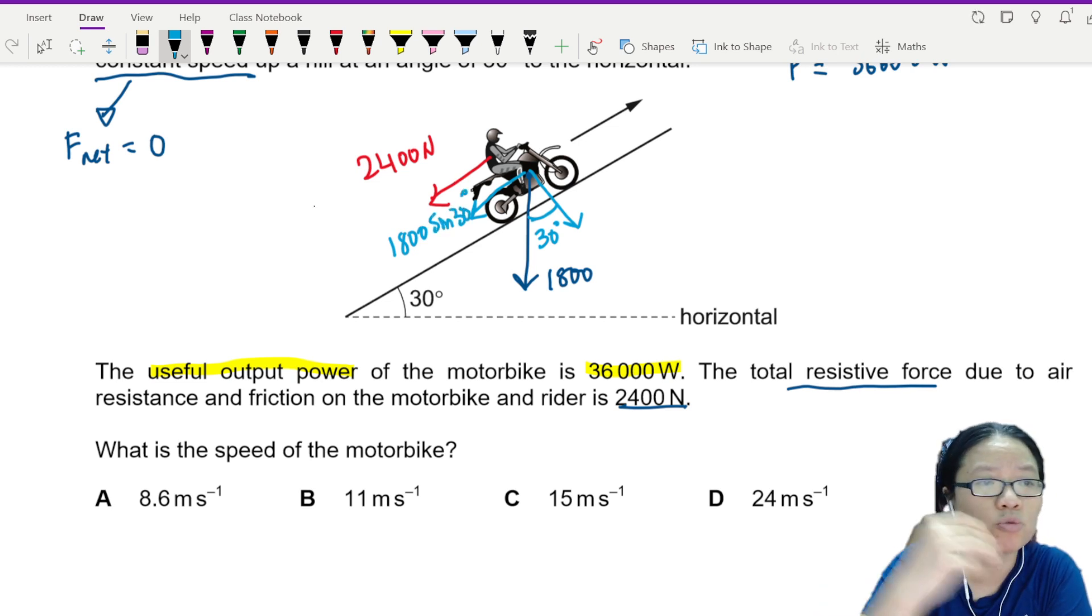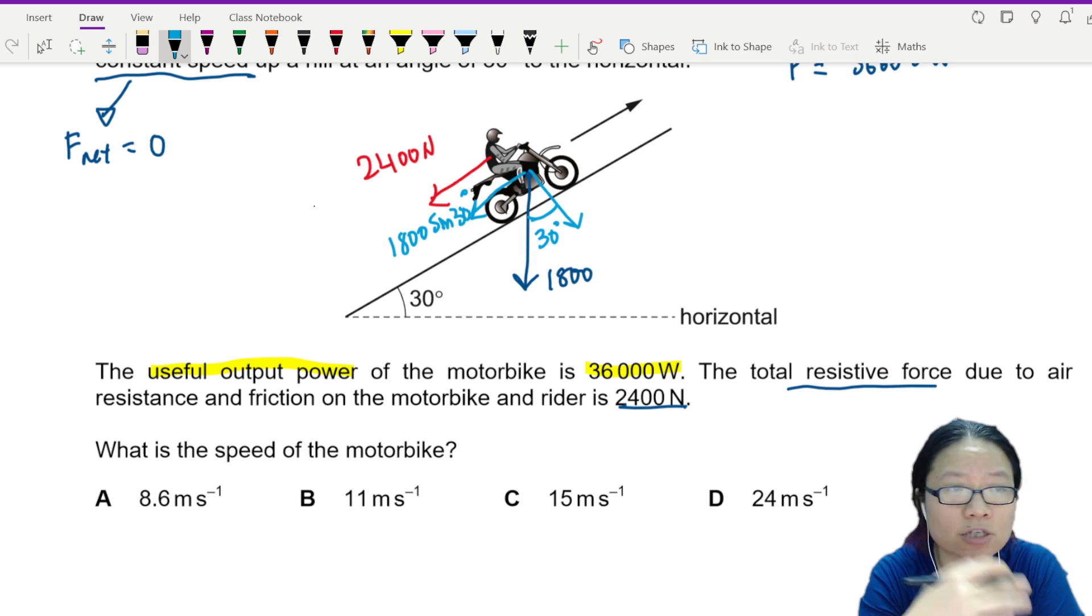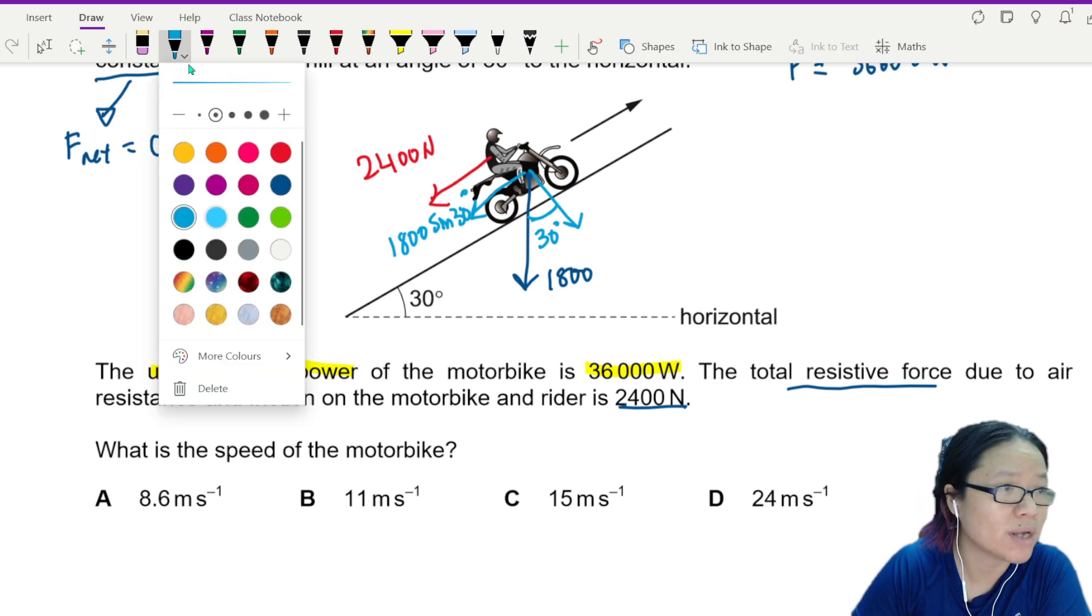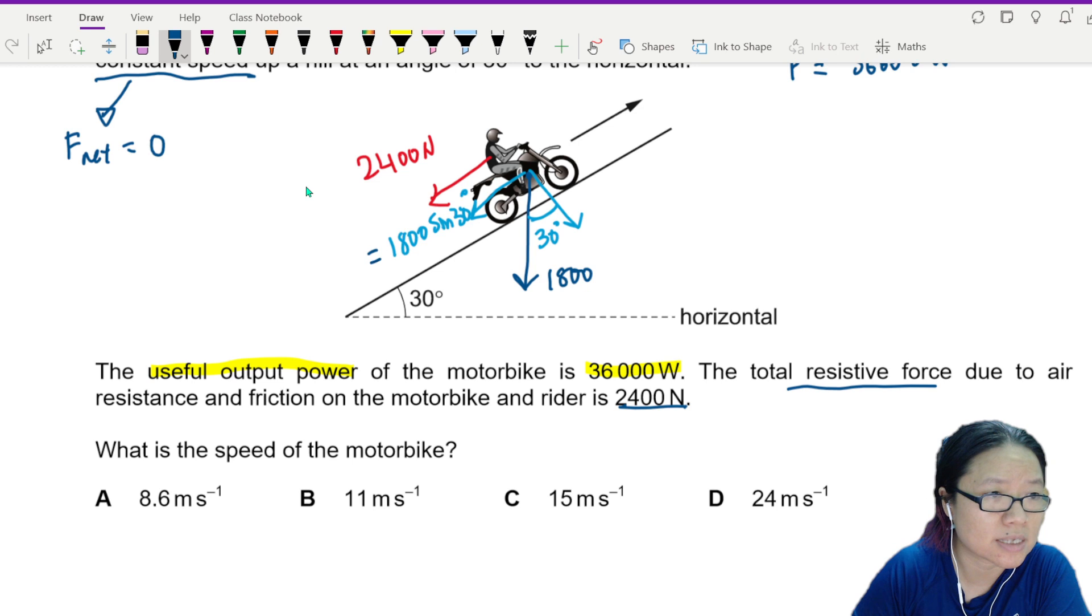So there are two things that are trying to pull the motor down. There is 2400 friction, there is also the weight, which is 1800 sin 30. If I press my calculator right, 1800 sin 30 is 900.